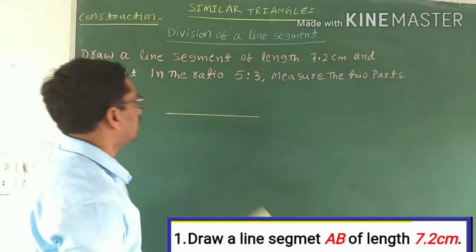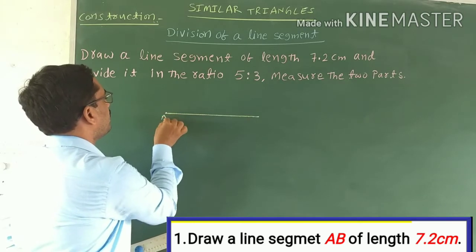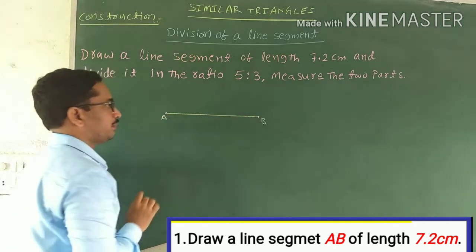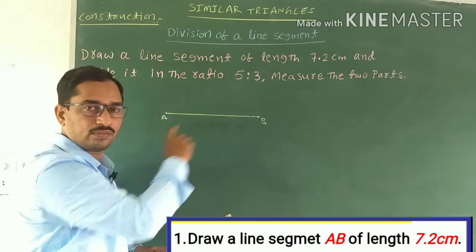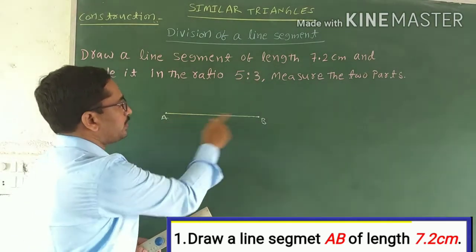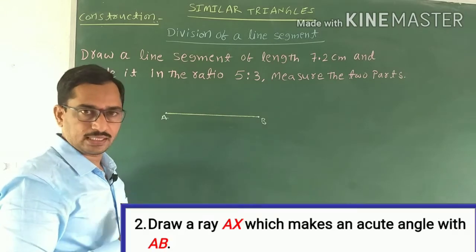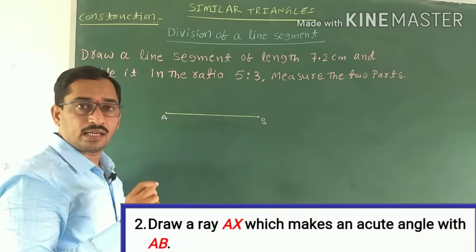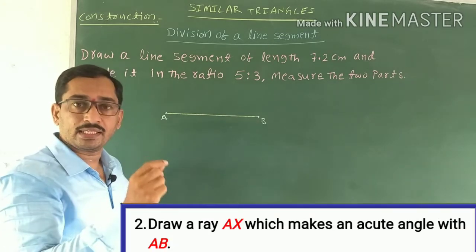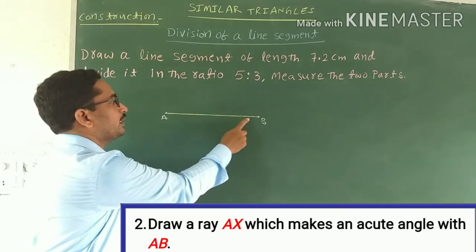First, draw a line segment AB of length 7.2 centimeters and denote it AB. Next, the second step: draw a ray which makes an acute angle with line segment AB.